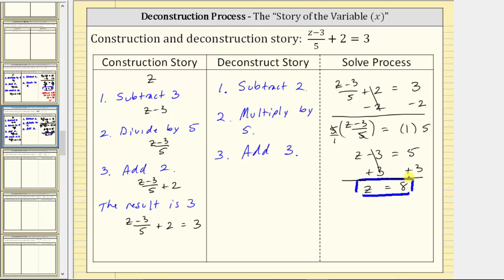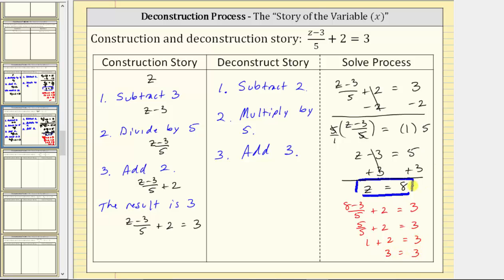Let's verify this by substituting eight for z in the original equation to make sure it satisfies the equation, meaning the left side equals the right side when z equals eight. Performing the substitution, we have the quantity eight minus three divided by five plus two equals three. On the left side, eight minus three is five. We have five divided by five plus two equals three. Five divided by five is one, and one plus two equals three. Three equals three is true, verifying the solution is correct. I hope you found this helpful.